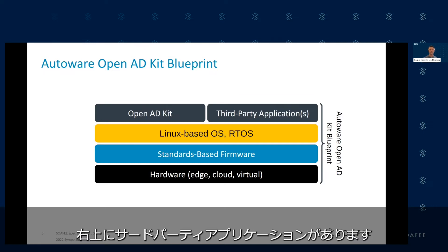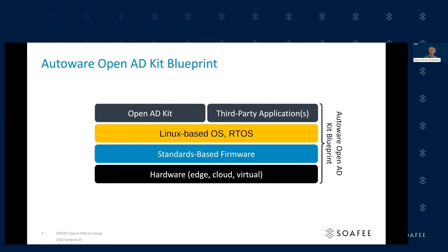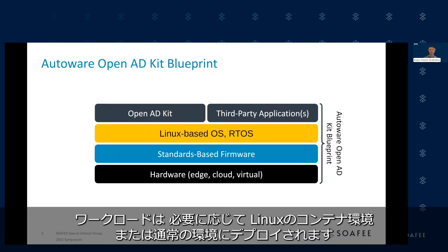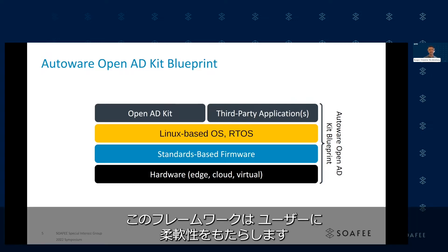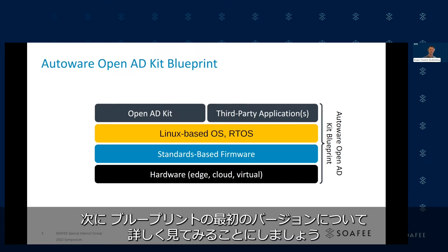Up in the top right, we have a third-party application, and this could, for example, be a data-collecting node or over-the-air updating service. The workloads are deployed in a Linux environment as containers or in an RTOS environment as needed. The framework provides a user with flexibility. Next, let's go into the details of the first version of the blueprint.